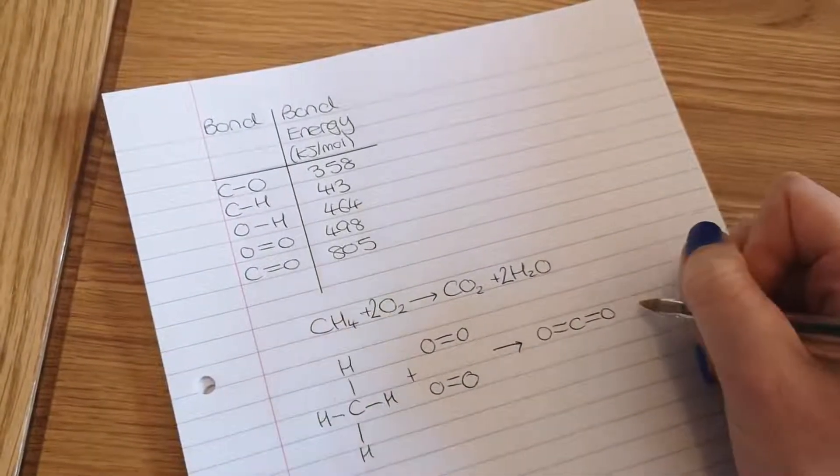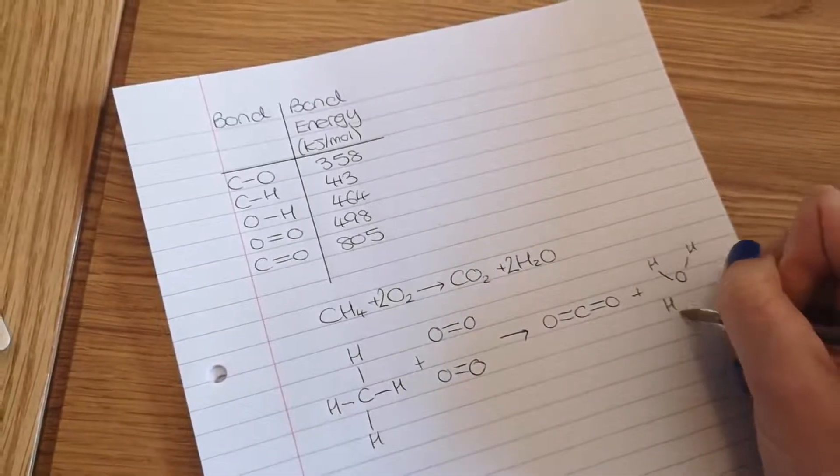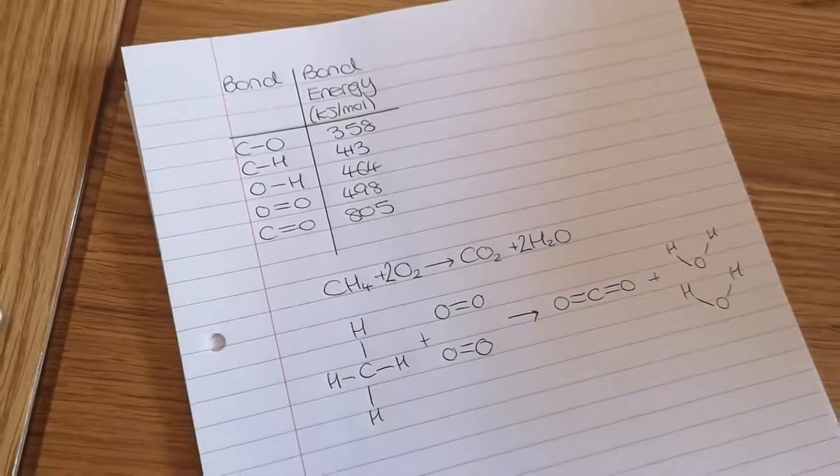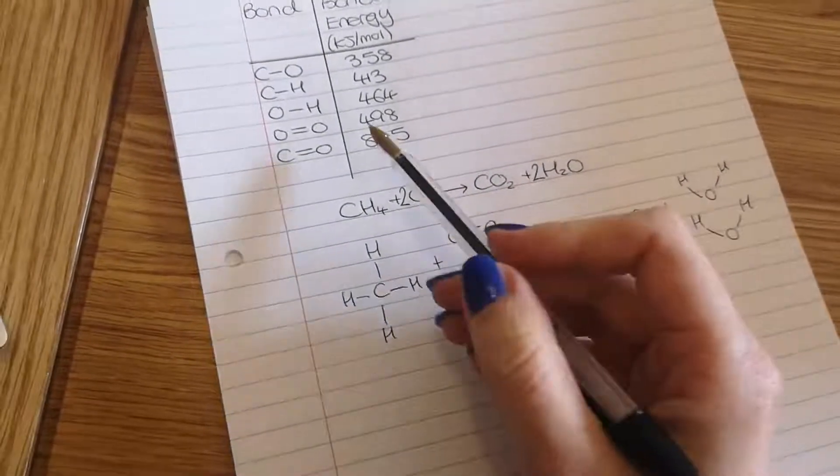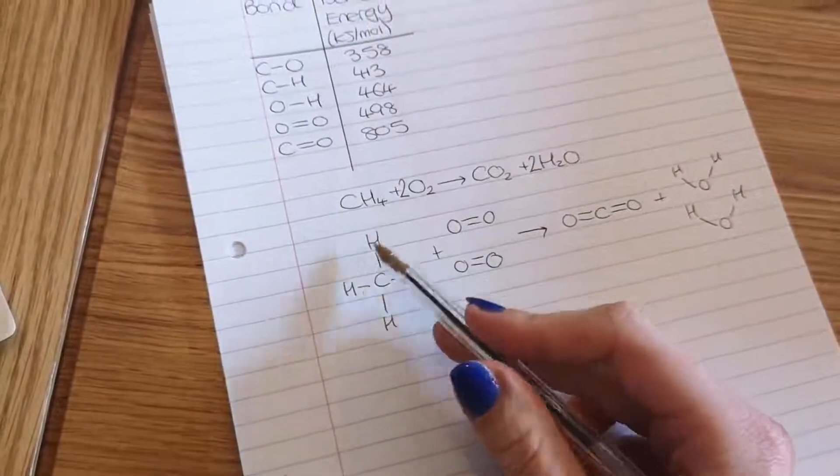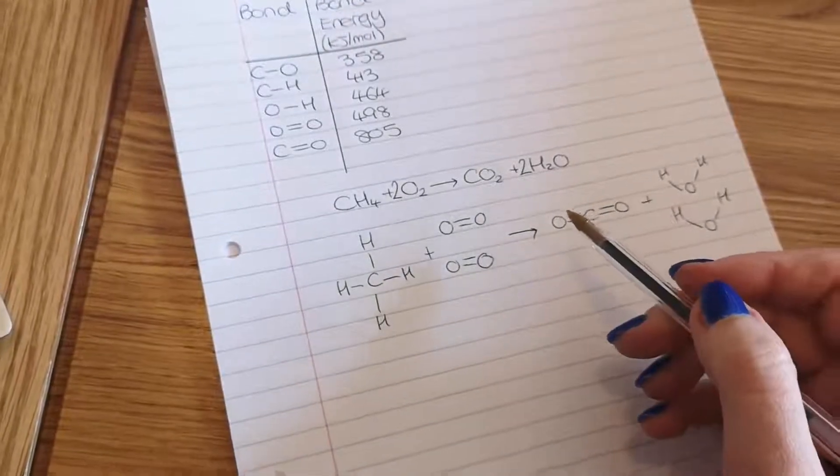I'm gonna make a carbon dioxide and two waters. Once you've drawn that out, you can start to work out which bonds are being broken and made using this information that you'll be given in the question. So all the bonds on the left hand side of the arrow get broken, and all the bonds on the right hand side of the arrow get made.